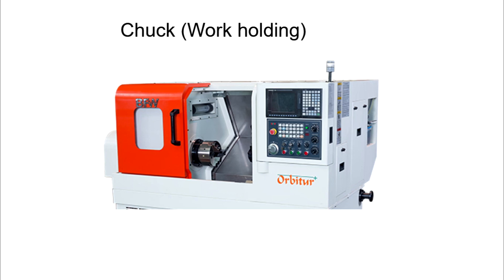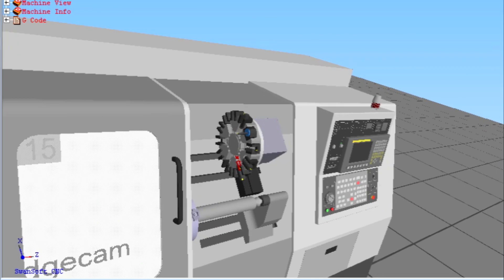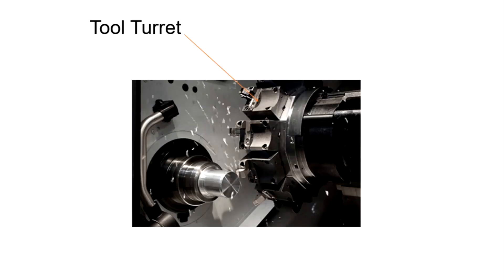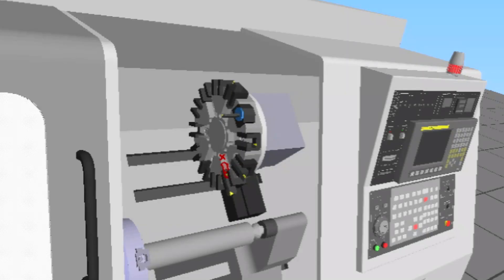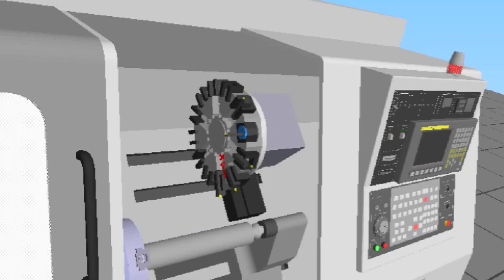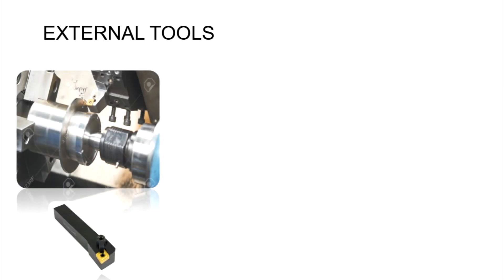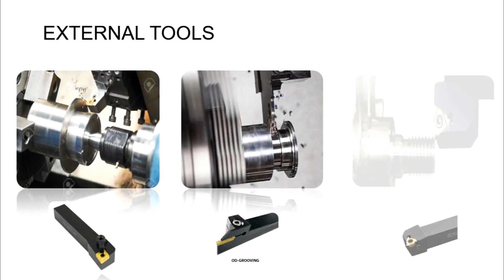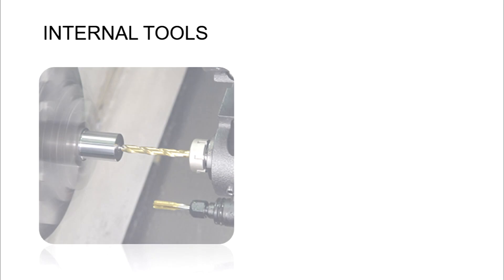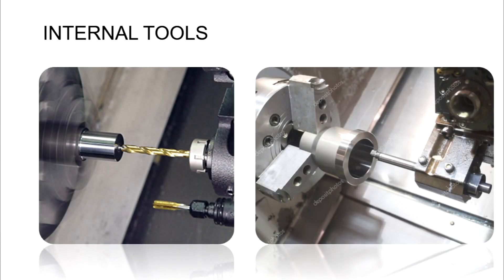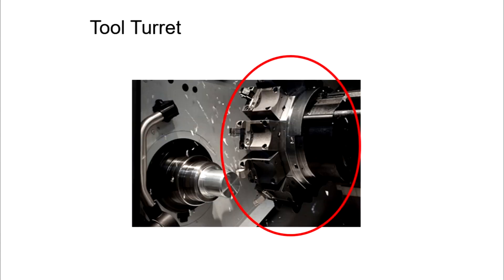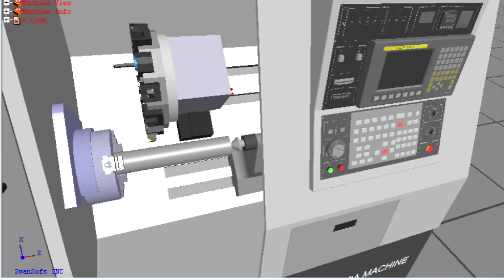Now we look at another important part of a CNC lathe: the turret. The turret is a tool-carrying element where we can store multiple tools required to perform various operations. The turret can be loaded with external tools such as turning, grooving, threading, and more. Also internal tools such as drill, boring bar, and more. Normally, the turret will have two-axis movement, that is X and Z.